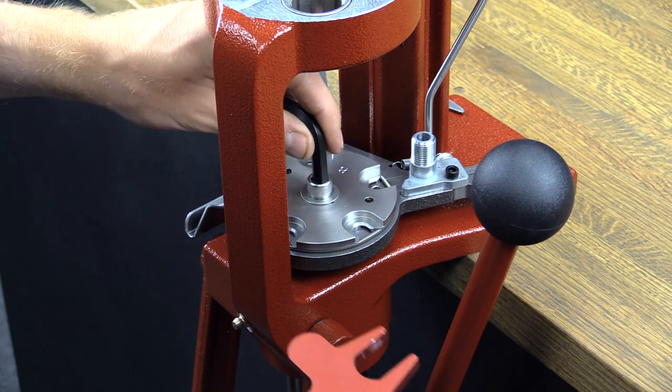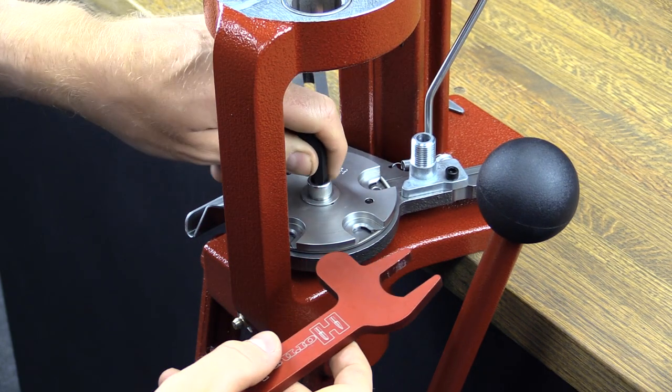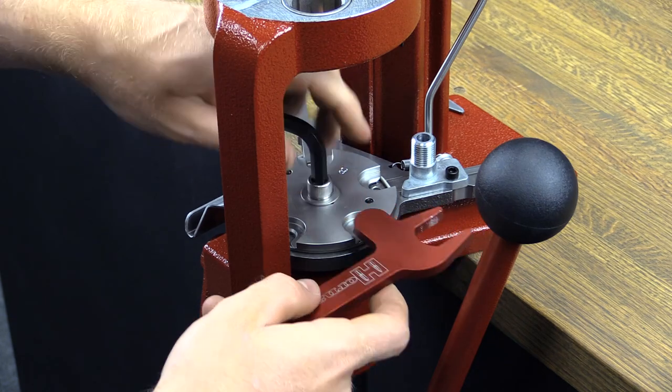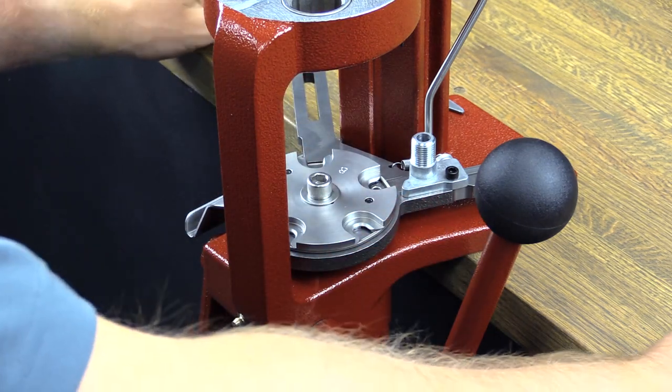When needing to remove the shell plate for changeover, use a 5-16 inch hex wrench and Hornady Lock and Load Deluxe die wrench to hold the shell plate while loosening.